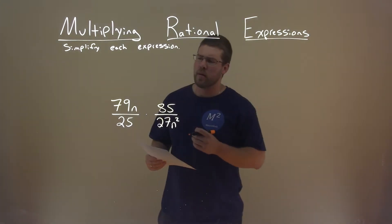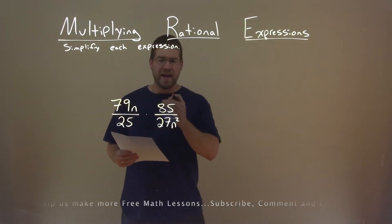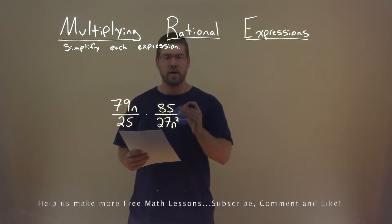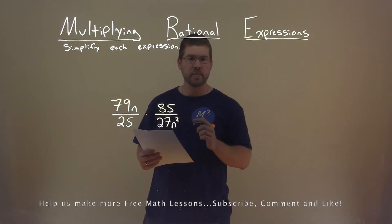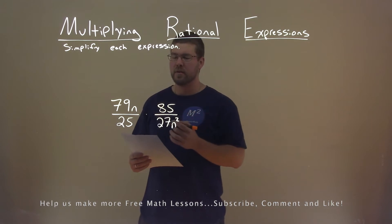We're given this problem right here. 79n divided by 25 times 85 divided by 27n squared. And we want to simplify this expression.